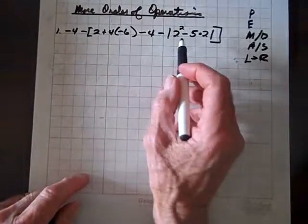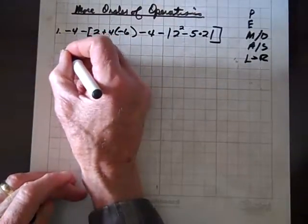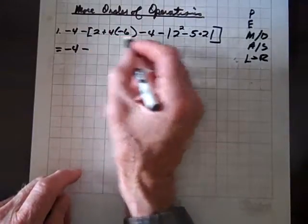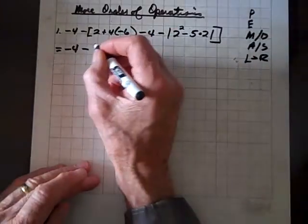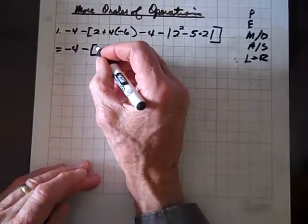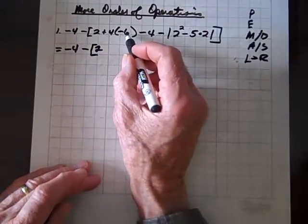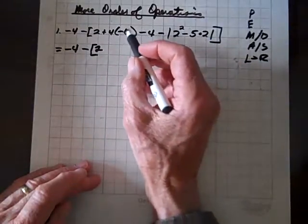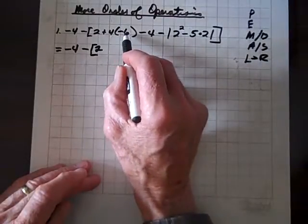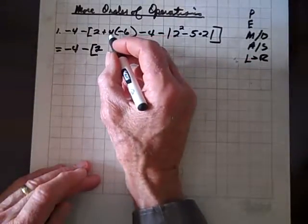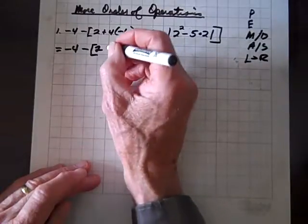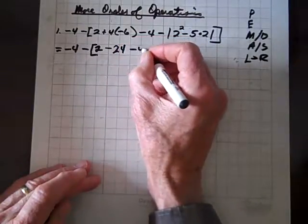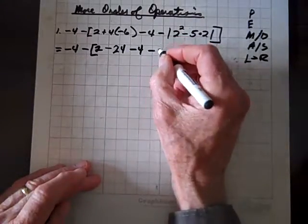Let's deal with this problem. We've got negative four — negative four is just negative four, nothing to do with that. We've got a negative outside of these brackets; brackets correspond to parentheses. We have a two here, and now we have a product, so we have to simplify that product. Are we going to multiply four times negative six, or subtract? Multiplication comes before addition, so we multiply: positive four times negative six — that's an odd number of negatives, so that's negative twenty-four. We still have this negative four and the absolute value.